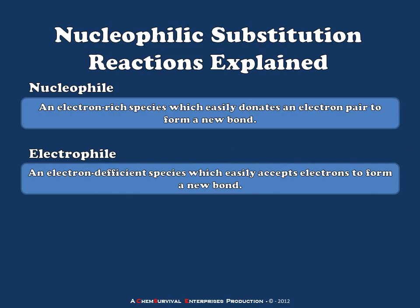The alter ego to the nucleophile is an electrophile. These would be defined as electron-deficient species which easily accept electrons to form the new chemical bond heterogenically. Electrophiles are going to be characterized by regions of dense positive charge and, in some cases, an incomplete octet of electrons. So electrophiles are very willing to accept electrons, acting as Lewis acids.